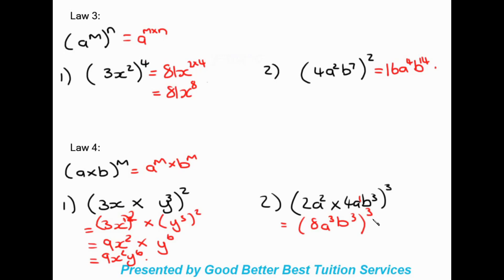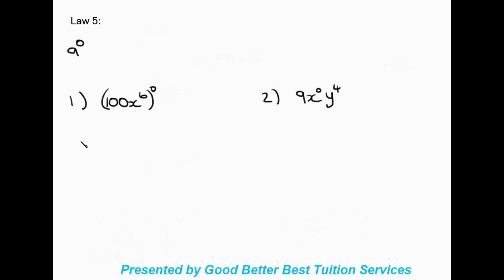Continuing that example: eight to the power of three gives 512, a cubed to the power of three gives a to the nine, and b to the power of three times three gives b to the nine. So the final answer is 512 a to the nine b to the nine. That covers laws three and four.